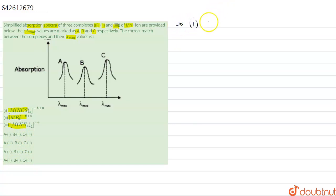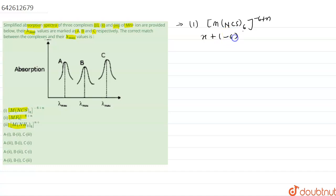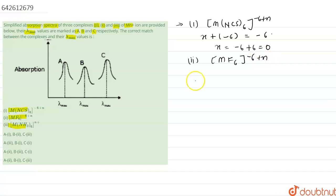First, we will check the oxidation state of the complexes. The first complex is Mn(SCN)₆⁶⁻. We know that thiocyanate has a minus one charge, so the oxidation state of the metal is x + (−6) = −6, giving x = 0. For the second complex, MnF₆⁶⁻, fluoride also has a minus one charge, so the oxidation state of the metal is again zero.